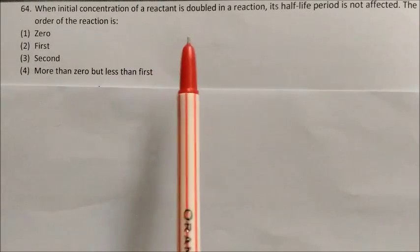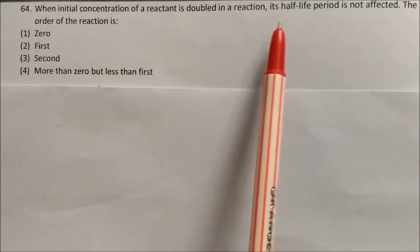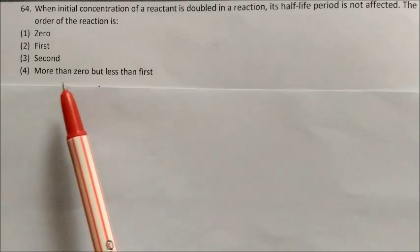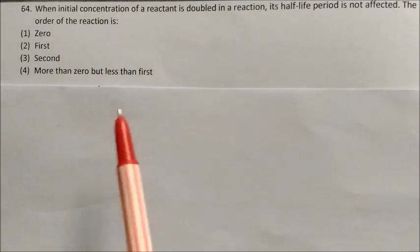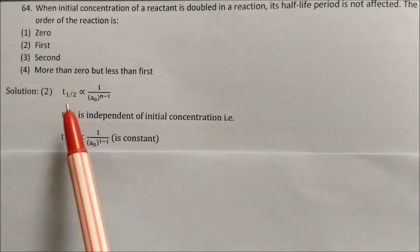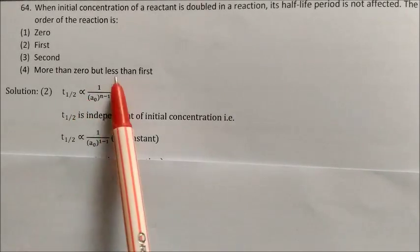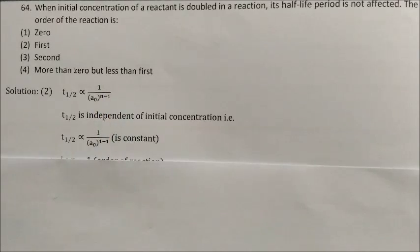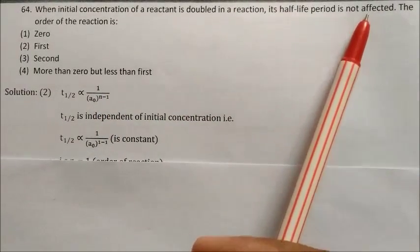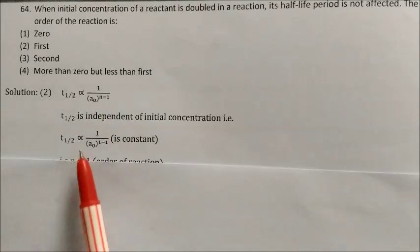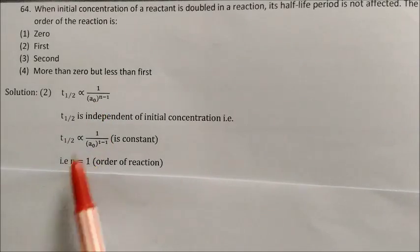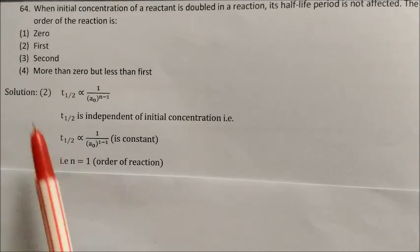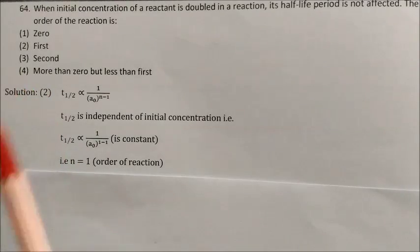Question: When the initial concentration of a reactant is doubled, its half-life period is not affected. What is the order of the reaction? The half-life formula: t½ ∝ 1/[A]^(n−1). If half-life is independent of concentration, then n−1 = 0, so n = 1. This is a first-order reaction. Answer: option 2.